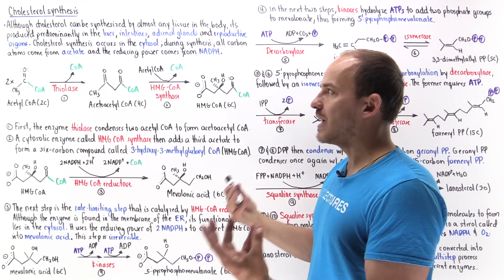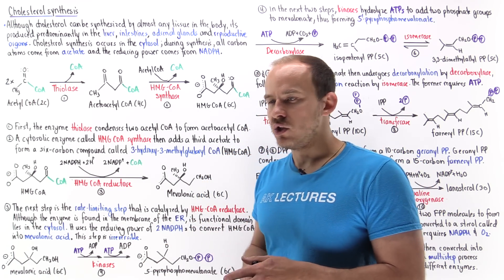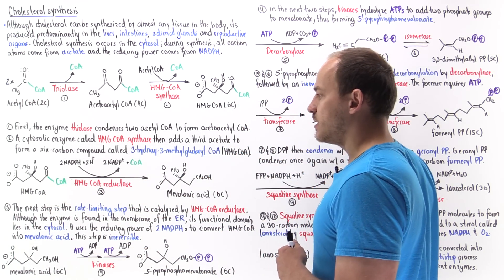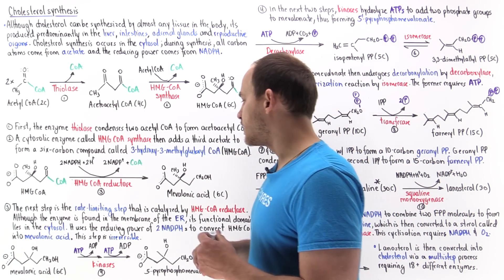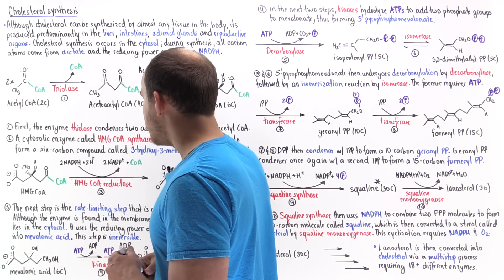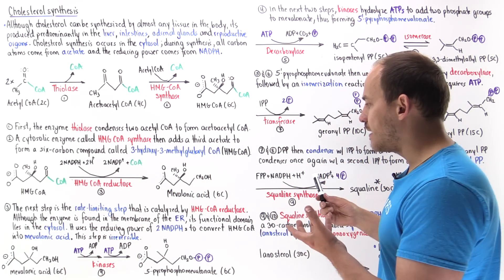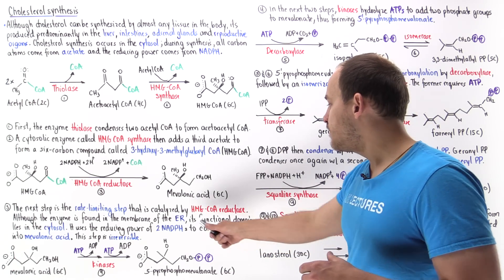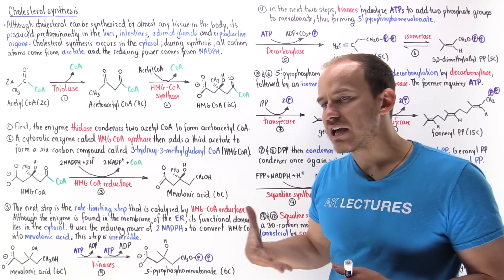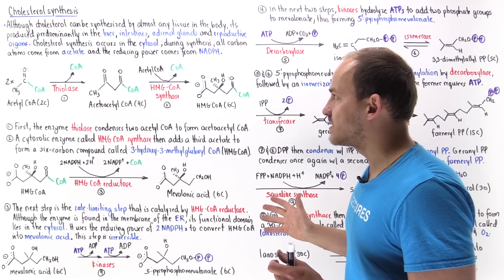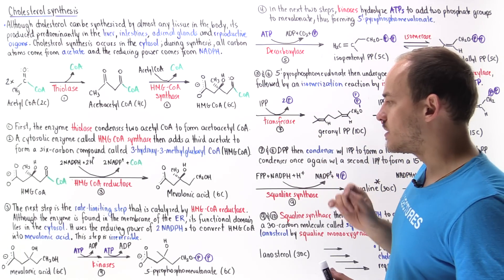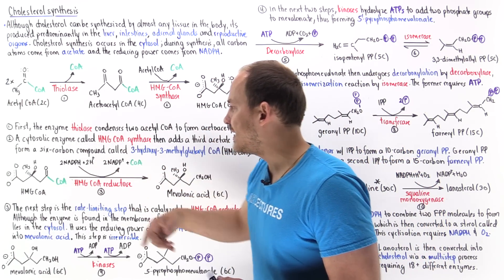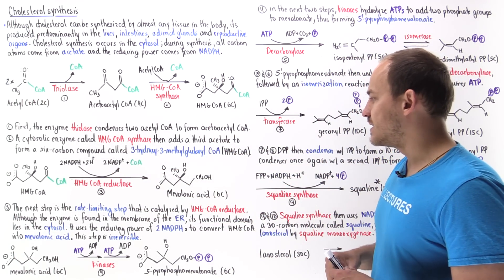For example, if we have a lot of cholesterol within our cell, there's a negative feedback loop that decreases the activity of HMG coenzyme A reductase, thereby decreasing this step and decreasing the amount of cholesterol we can synthesize. This reductase uses the reducing power of two NADPH molecules to form mevalonic acid — going from a 6-carbon to a 6-carbon molecule.